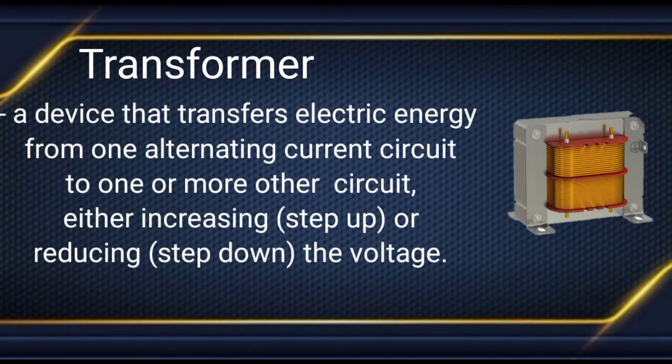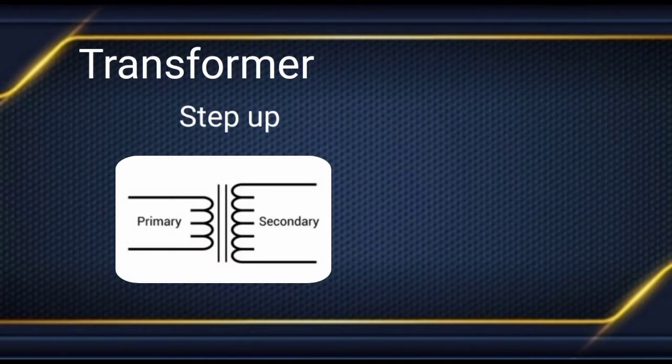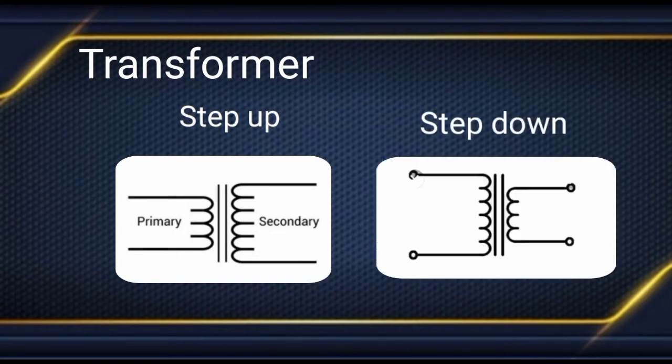Next, we have the transformer — a device that transfers electrical energy from one alternating current circuit to one or more other circuits, either increasing (stepping up) or reducing (stepping down) the voltage. In the step-up transformer, the primary winding is lower than the secondary winding, while in the step-down transformer, the primary winding is higher than the secondary winding.